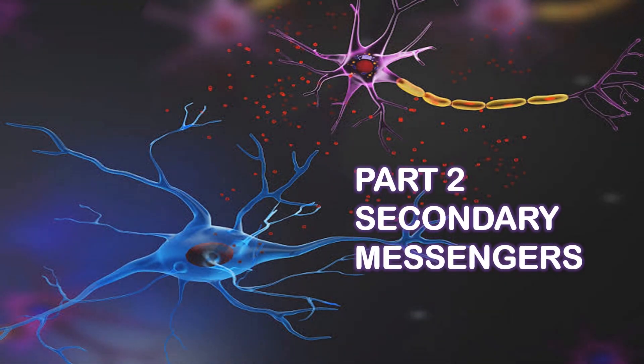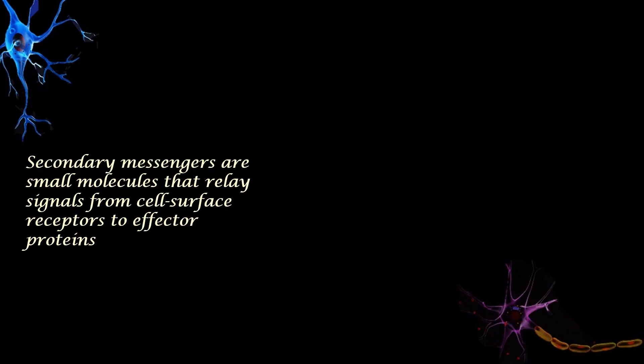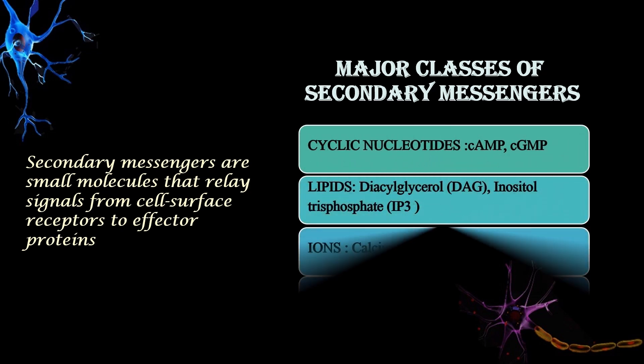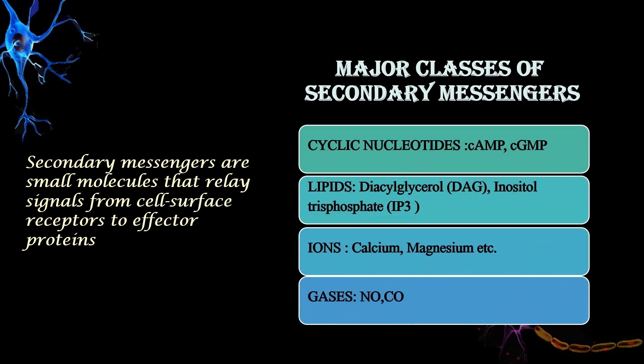In this video, we will be focusing on secondary messengers. Secondary messengers are small molecules that relay signals from cell surface receptors to effector proteins. The major classes of secondary messengers are cyclic nucleotides, lipids, ions, and gases, and we will be discussing all of these in detail.